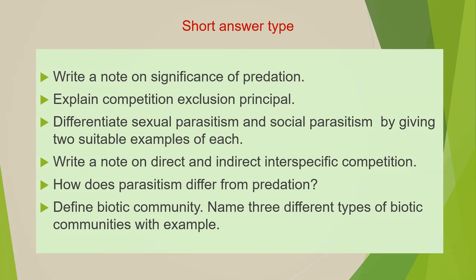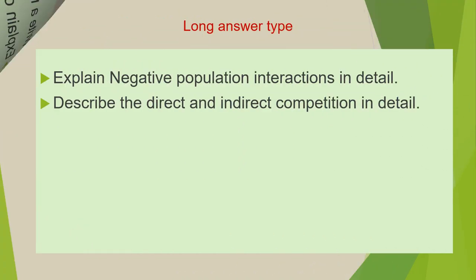The third category of questions are long answer type questions. The first question of this category is: explain negative population interactions in detail. And the last question is: describe the direct and indirect competition in detail.